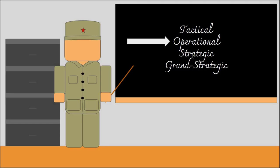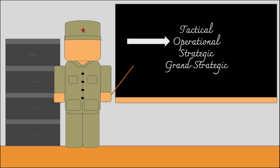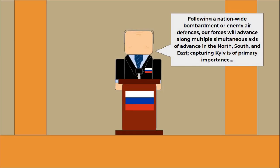The next level up is the operational level of things, but to help explain it better, I actually have to quickly jump to the level above it: strategy. The strategic level is basically your endgame — it's what political objectives you want to achieve. With this in mind, we can look back at the operational level. This is the link between the tactical level, referring to individual battles, and the strategic level, being your political objectives. If the strategic level is what you want done, then the operational level is how to get it done. Military operations consist of many battles and work towards fulfilling strategic goals.